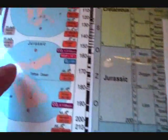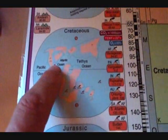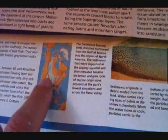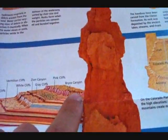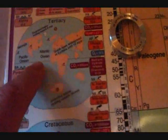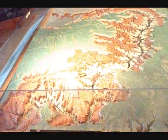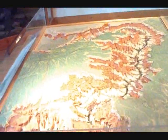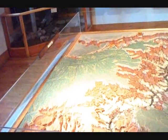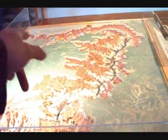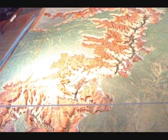Then much later — and this is really very recent — there is another inundation: the Cretaceous Seaway, which gives you the rocks of Bryce and such like. And then finally, from here we go up to about 70 million years ago, where we get the uplift of the Rockies, which also uplifts this entire plateau. All the precipitation and snow falling on the Rockies melts and carves the canyon over the last six million years. So that is the story of the Grand Canyon.